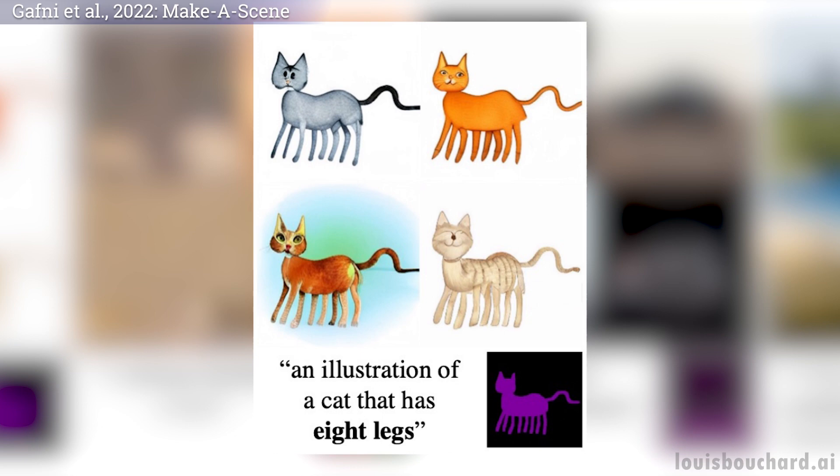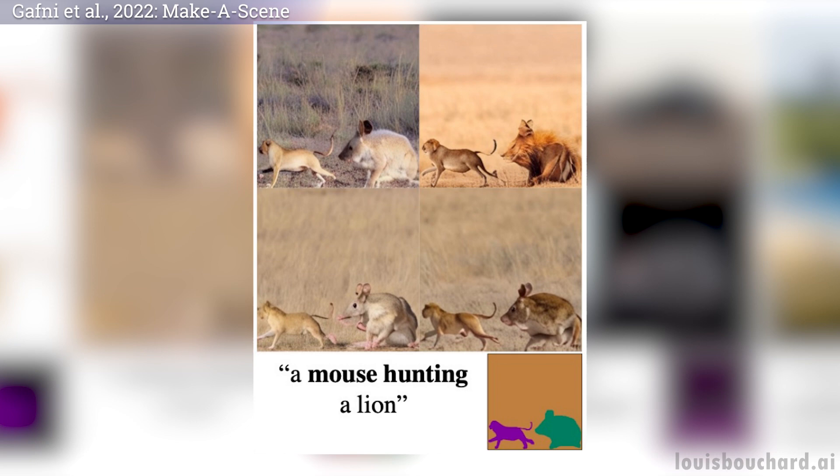And voilà! This is how Meta's new model is able to take a sketch and text inputs and generate a high-definition image out of it, allowing more control over the results with great quality. And as they say, it's just the beginning of this new kind of AI model. The approaches will just keep improving both in terms of quality and availability for the public, which is super exciting.